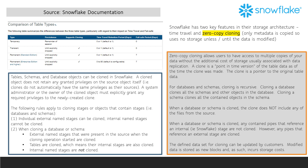For databases and schemas, cloning is recursive. Cloning a database clones all the schemas and other objects in the database, including the internal stages of a table. Cloning a schema clones all the contained objects in the schema.